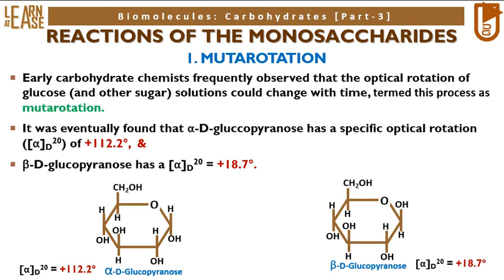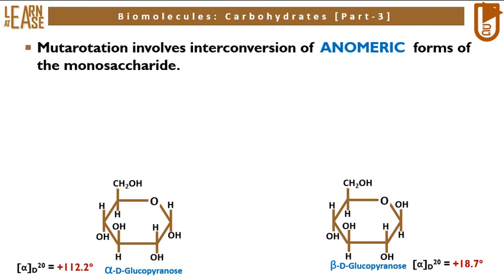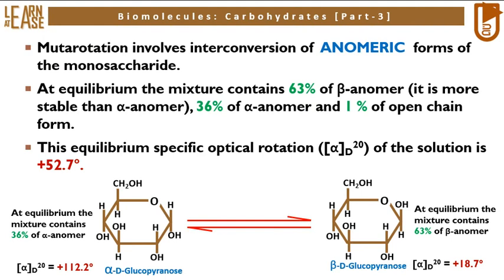Mutarotation involves interconversion of anomeric forms of the monosaccharide, shown in the image by red arrows. At equilibrium, the mixture contains 63% of the beta anomer — it is more stable than the alpha anomer — 36% of alpha anomer, and 1% of open chain form. This equilibrium specific optical rotation of the solution is +52.7 degrees. Carefully see the image for better understanding.